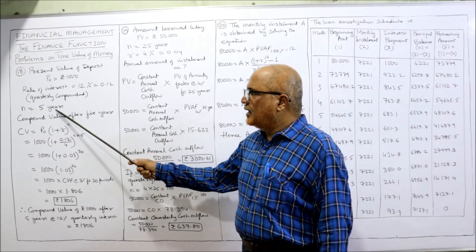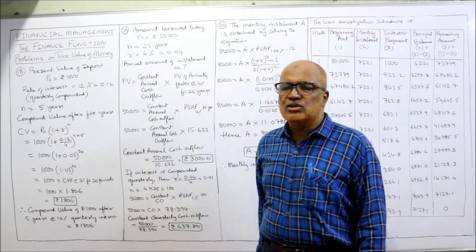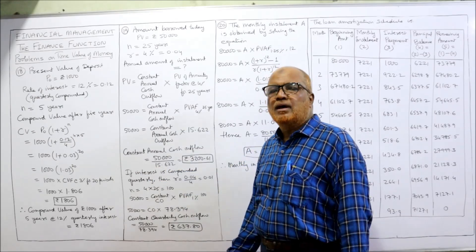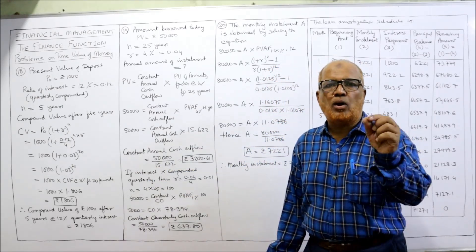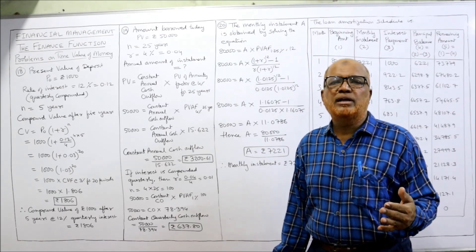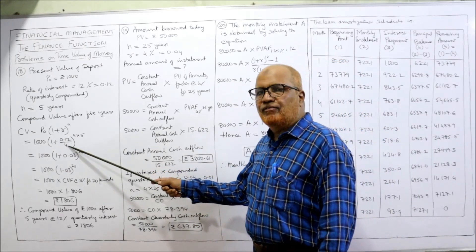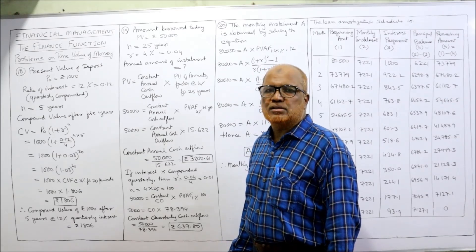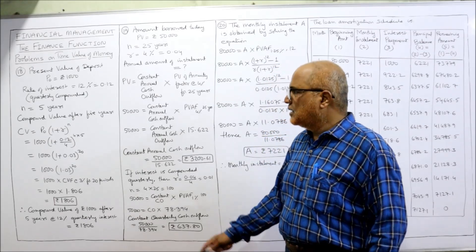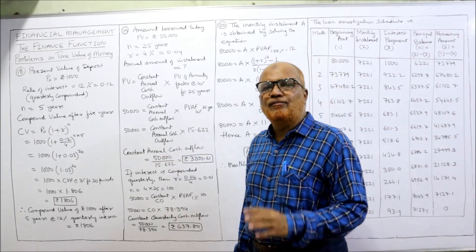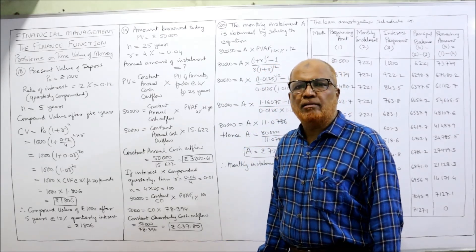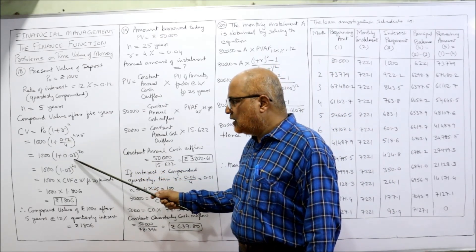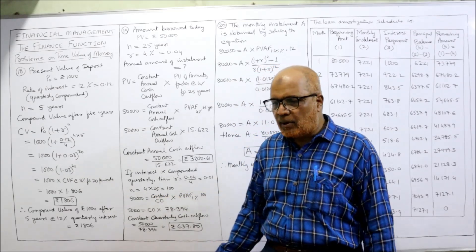The present value of the deposit is 1,000. The rate of interest is 12% per annum, but interest is credited quarterly. Number of years is five. The compound value formula is: CV = PV × (1 + R/m)^(n×m). Here, the annual rate is 12%, so 0.12 divided by 4 quarters gives 3% quarterly. In five years, interest is calculated 5 × 4 = 20 times. So it becomes 1,000 × (1.03)^20.